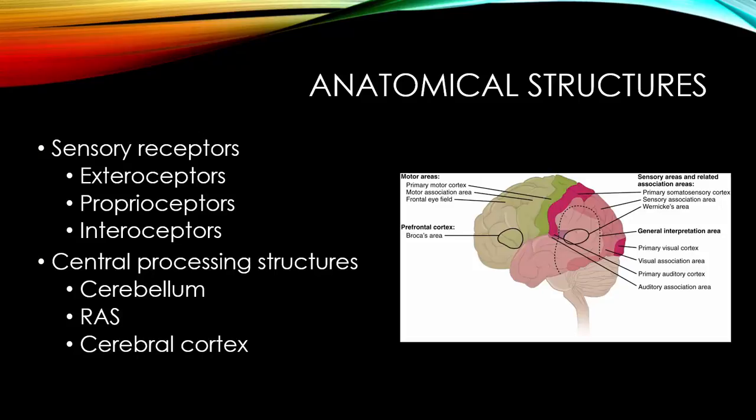We also have central nervous system processing structures that are important. First, the cerebellum, which plays an important role in proprioception. We have our reticular activating system, or RAS, also called the reticular formation. This is a cluster of neurons that form a neurologic pathway extending from the upper pons to the thalamus and hypothalamus. It is responsible for the arousal or wakefulness component of our consciousness, and it is the input center that receives sensory input from peripheral sensory receptors and sends projections on to our cerebral cortex.